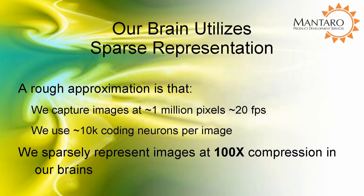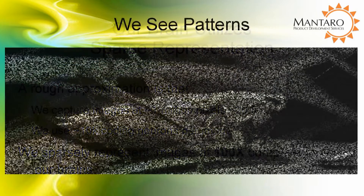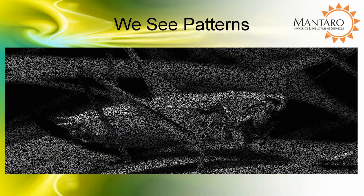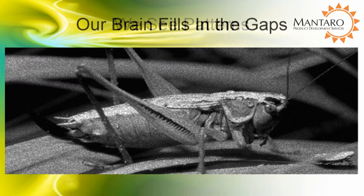Research has shown that we utilize around 10,000 neurons to code 1 million pixel images at 20 frames per second in our brain. This is a compression ratio of 100 times. This makes it possible to interpret very noisy images like this — we recognize the objects of the image.